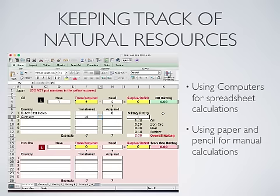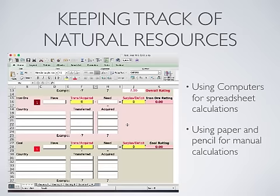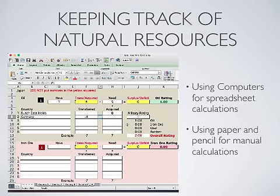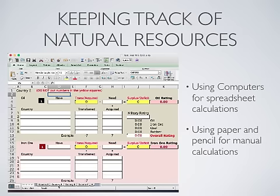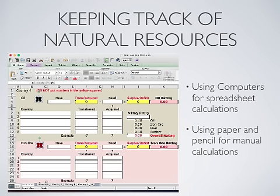We still get a 1.0 for oil and now we've got an overall rating of 2.0 because we've only used one of the resources. You can see we have boxes for iron ore, coal, and rubber, so all these resources would be taken care of on this sheet. This helps keep track of what you've done and what you've taken over. We've got four different tabs so that if you have more than one country, you can keep track of your resources separately, and that will help keep you more organized.